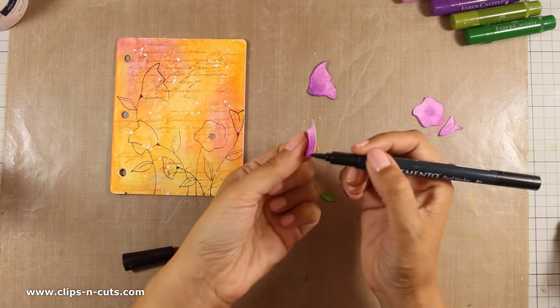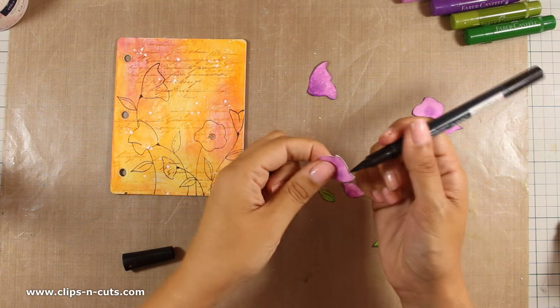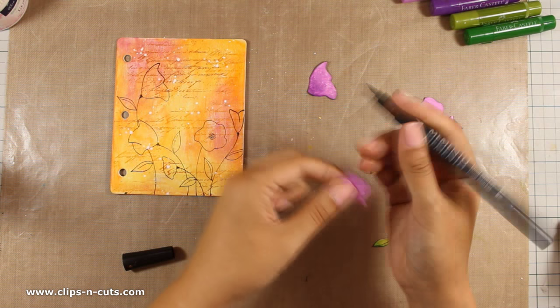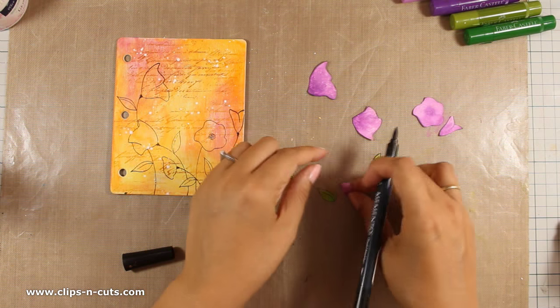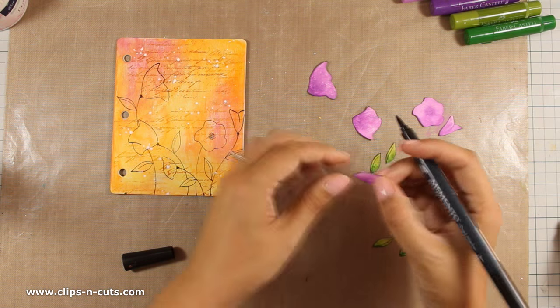Now I can go ahead and get ready to stick everything down. Just to make sure that I get rid of the white edge, I'm using a black marker all over the edges.